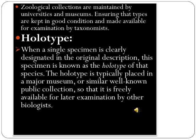Zoological collections are maintained by universities and museums, ensuring that types are kept in good condition and made available for examination by taxonomists. When a single specimen is clearly designated in the original description, that specimen is known as the holotype of that species. The holotype is typically placed in a major museum or similar well-known public collection so that it is freely available for later examination by other biologists.